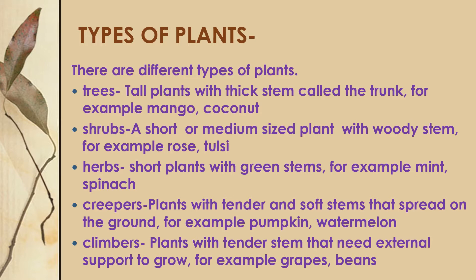For example, pumpkin and watermelon. Climbers are plants which also have tender stems and need external support to grow. For example, grapes and beans. You will generally find them climbing on a wall, another tree, or a stick — they will always need support to grow up.